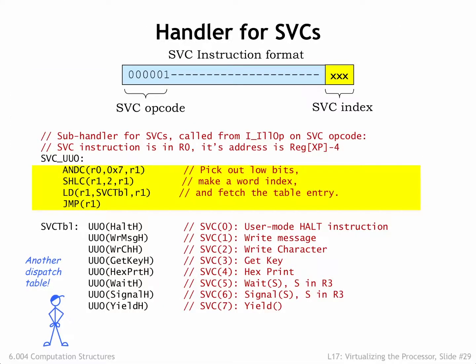In the previous segment, we saw how the illegal instruction handler uses a dispatch table to choose the appropriate sub-handler depending on the opcode field of the illegal instruction. In this slide, we see the sub-handler for SVC instructions — those with an opcode field of 1. This code uses the low-order bits of the instruction to access another dispatch table to select the appropriate code for each of the 8 possible supervisor calls.